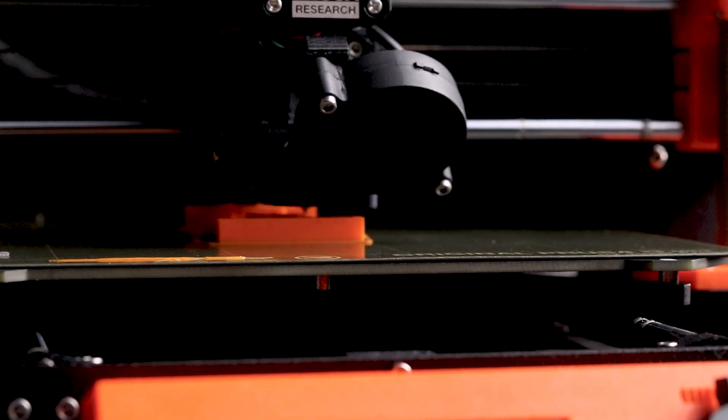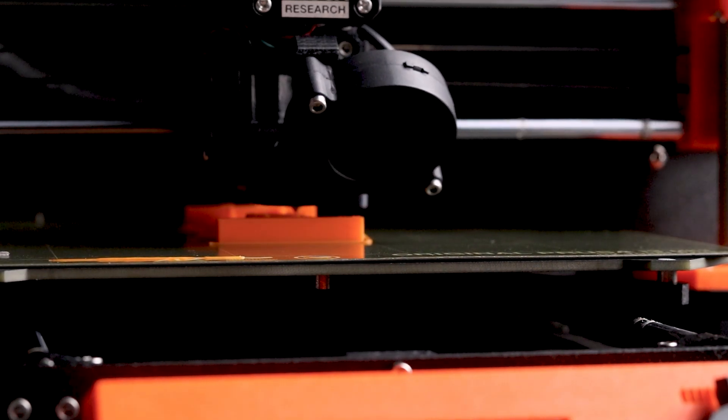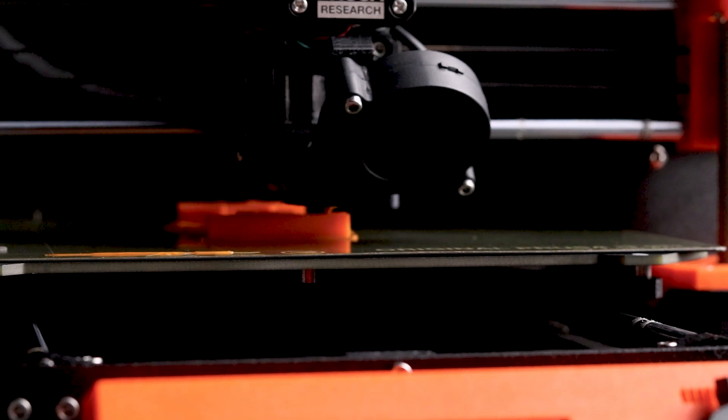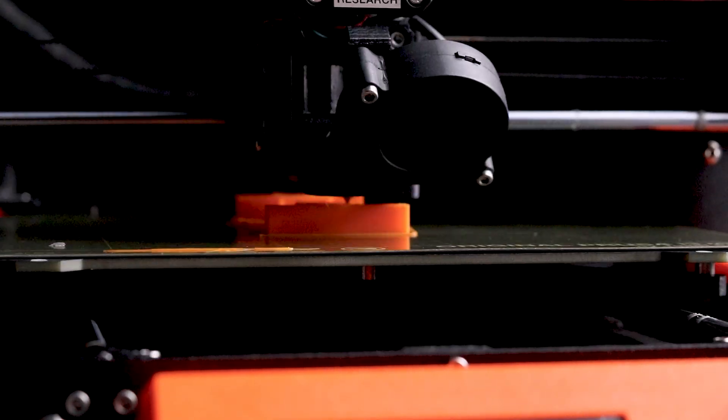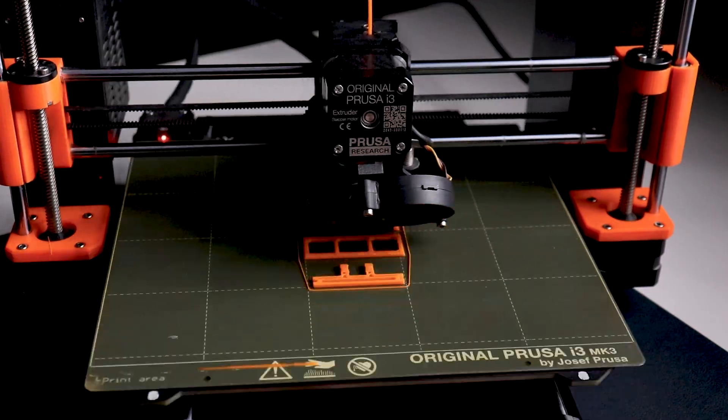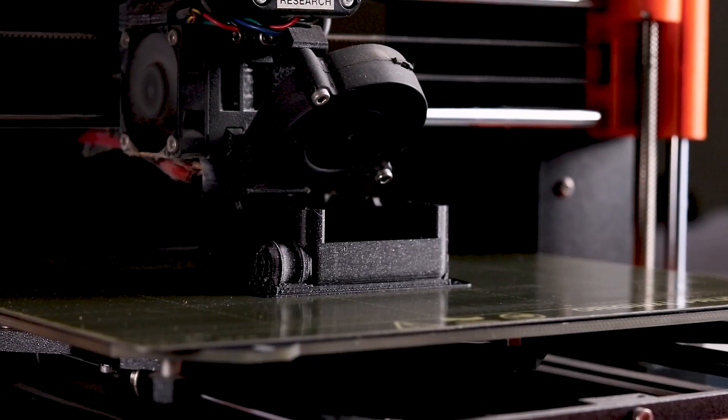We are using a Prusa i3 printer. There are 6 different parts and a choice for color. Here we have used orange and black PLA for printing, but you can use any of them.